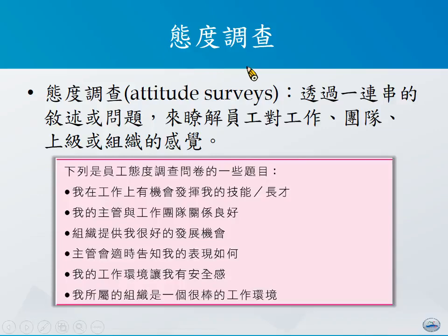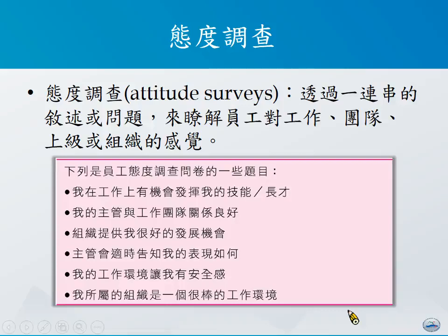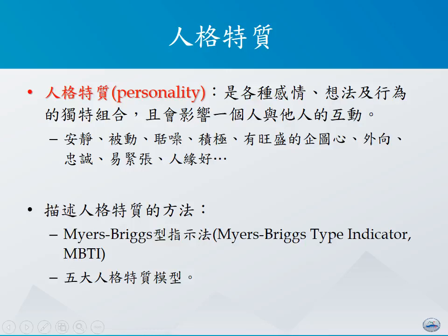这些常见的问题包括：「我在工作上有机会发挥我的技能或长才」、「我的主管跟工作团队的关系良好」、「组织可以提供给我相当好的发展机会」、「主管会适时告知我的表现如何」、「我的工作环境让我有安全感」，以及「我所属的组织是一个很棒的工作环境」。这类问题可以帮助我们了解员工对工作场所的未来发展需求，以及是否能充分发挥专长，进而知道组织有什么问题可以改善，帮助员工提高工作满意程度。